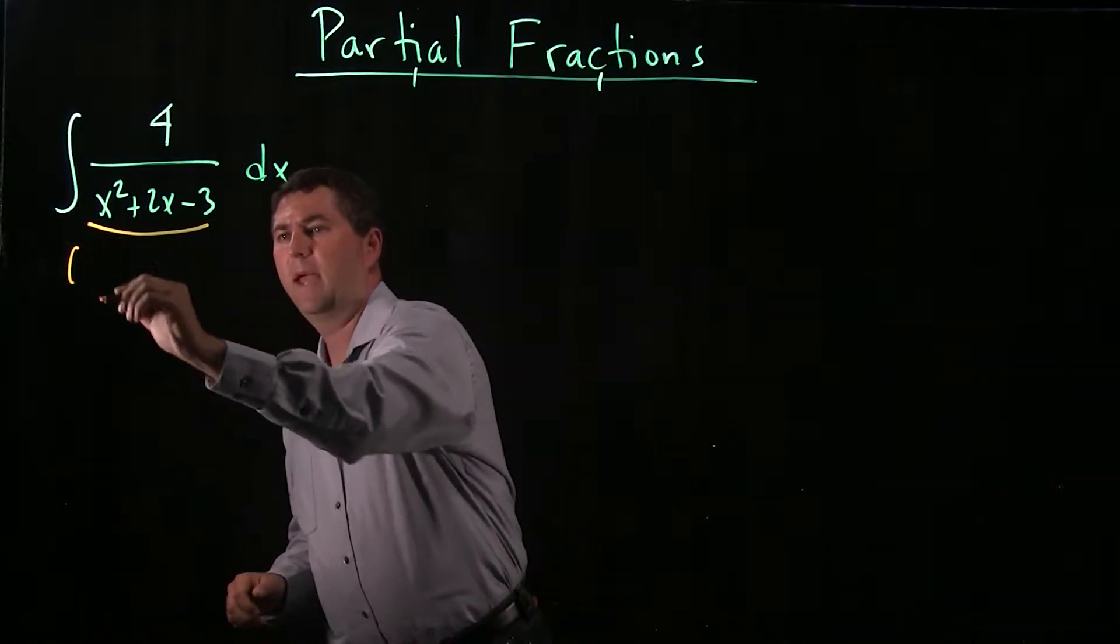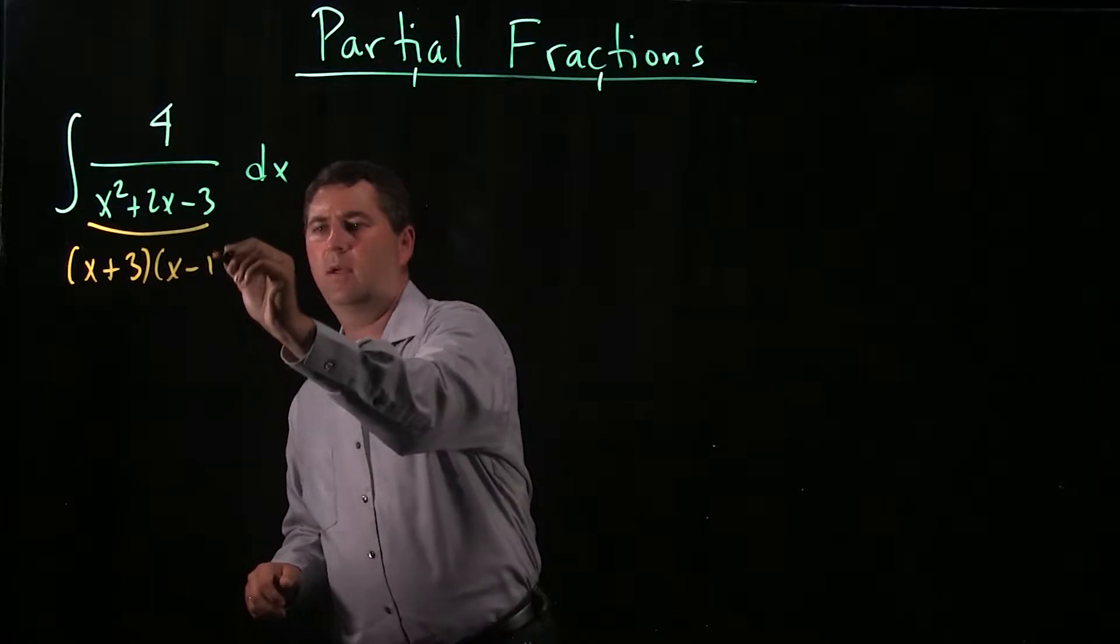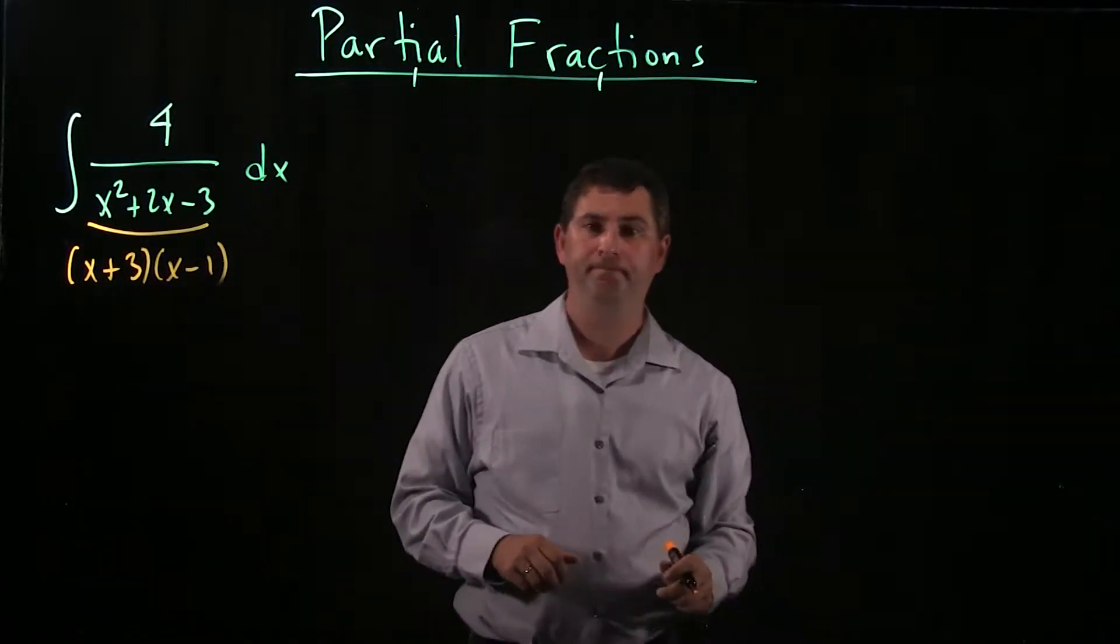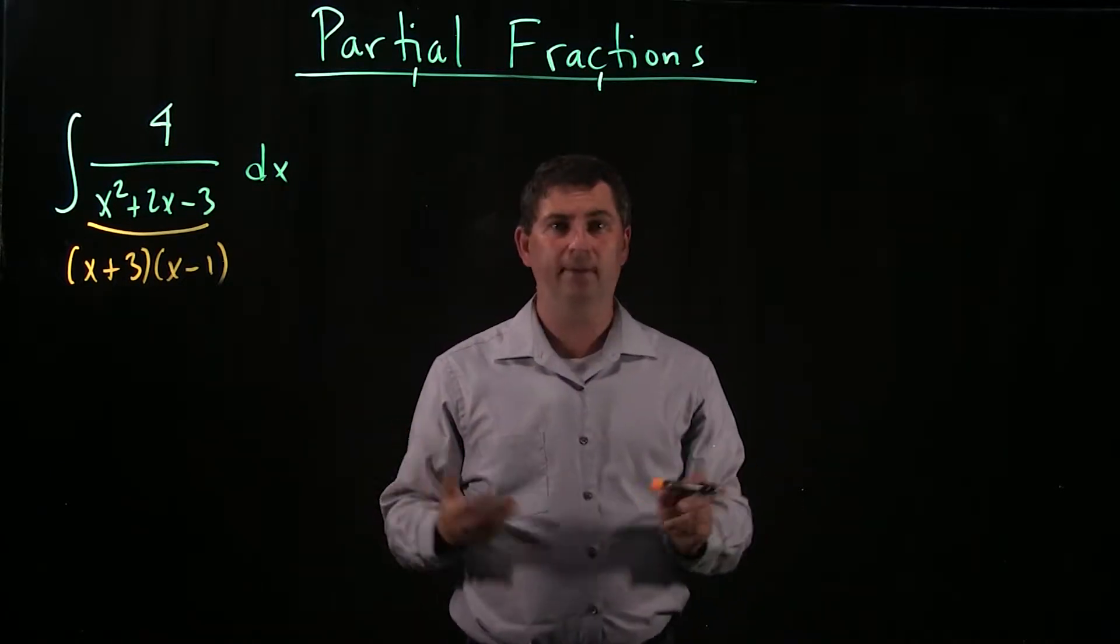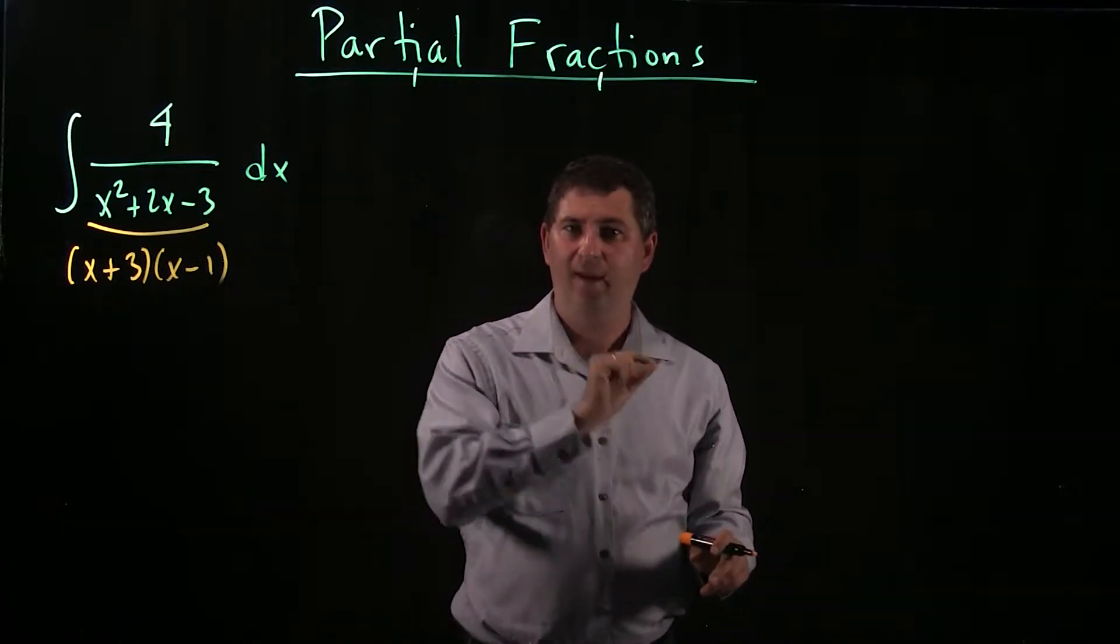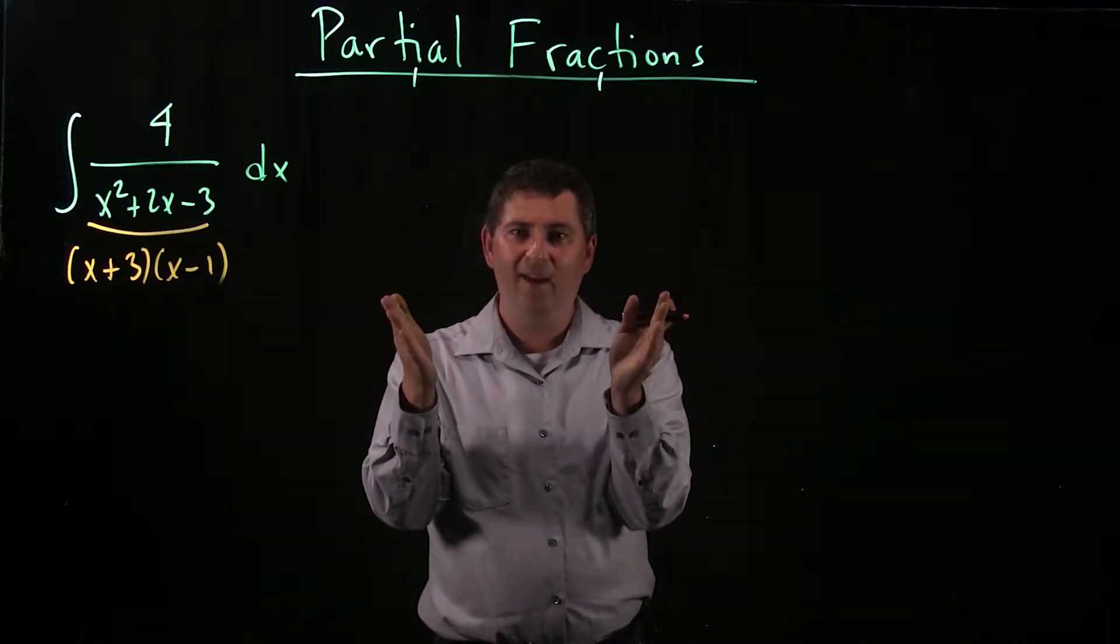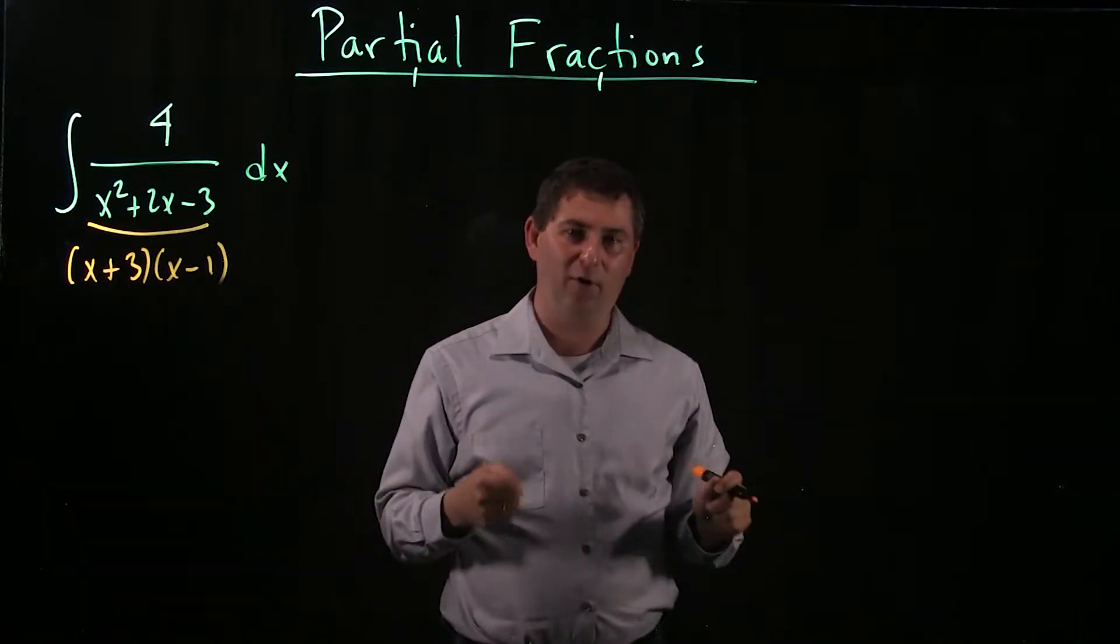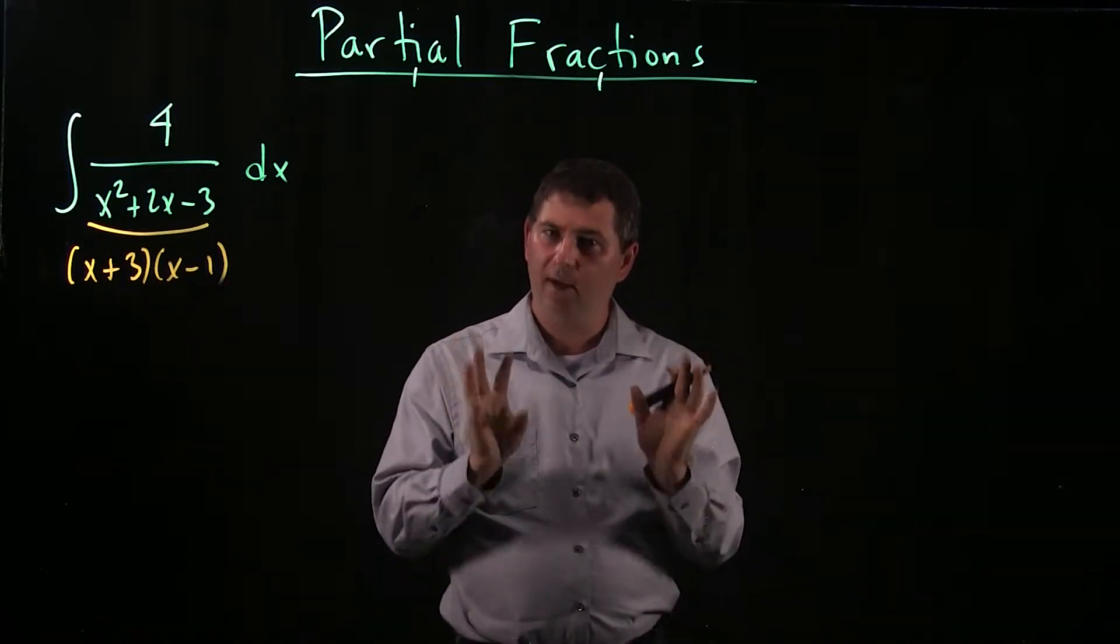I can factor x squared plus 2x minus 3 as x plus 3 times x minus 1. Okay, great. So I just split the fraction up, integrate term by term, right? Wrong. You cannot break a fraction up or an integral up into a product and then integrate term by term. Integral of a product is not the product of the integrals. So we need another way.